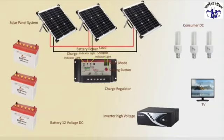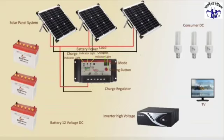Three solar panels in parallel connection give an outgoing voltage of 12 volts. The positive terminal goes to the charging controller input. Negative terminal of the solar panels connects to the charging controller negative input. Battery connection is then complete.